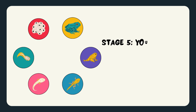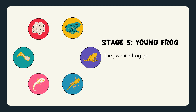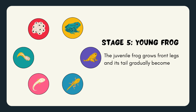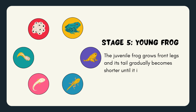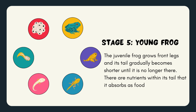Stage 5: Young Frog. The juvenile frog grows front legs and its tail gradually becomes shorter until it is no longer there. There are nutrients within its tail that it absorbs as food.